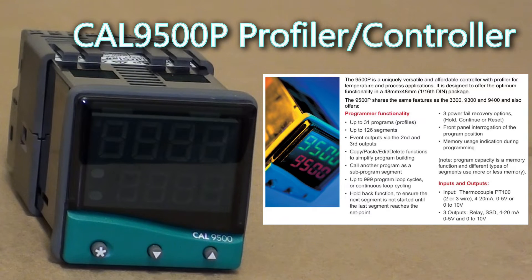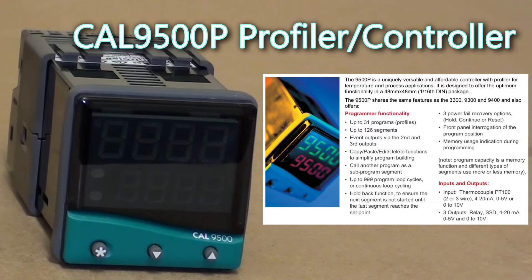The CAL 9500P is a 1/16th DIN programmable controller for temperature and process applications. It accepts standard instrument input signals and has full PID control functionality.